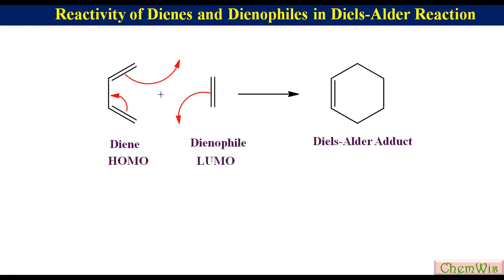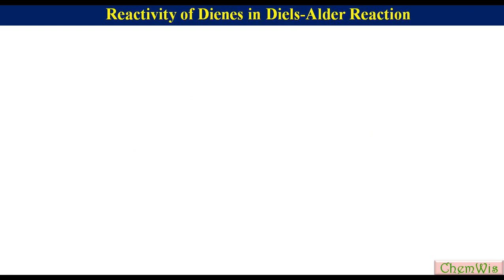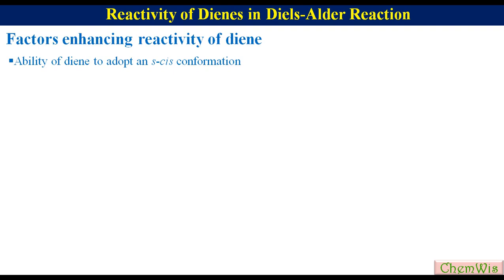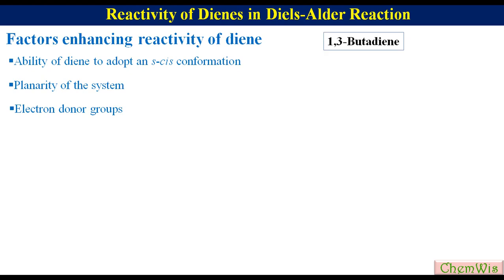Let's first discuss the reactivity of the diene. The reactivity of diene is increased by the following factors: ability of the diene to adopt S-cis conformation, planarity of the system, and electron donor groups. Let's take the example of 1,3-butadiene — this is the S-trans form and this is the S-cis form.